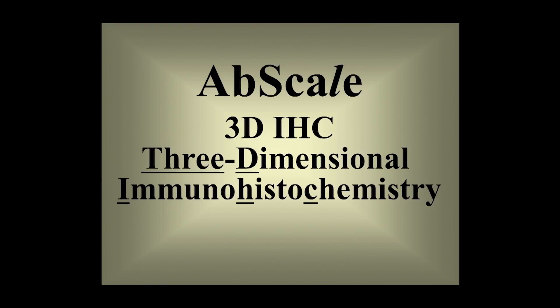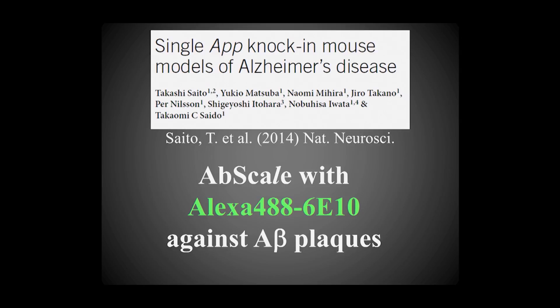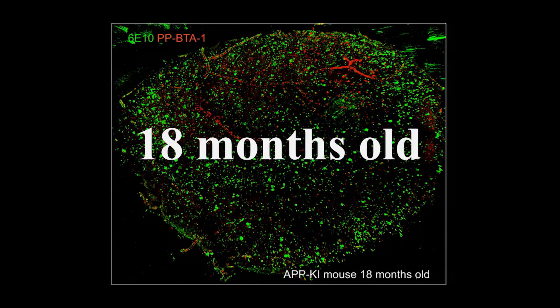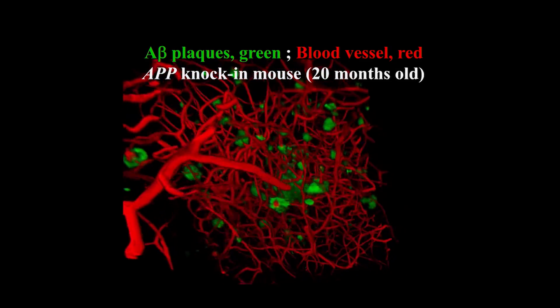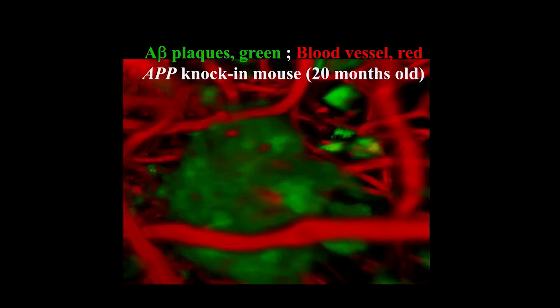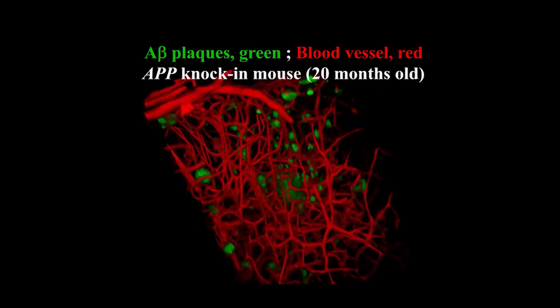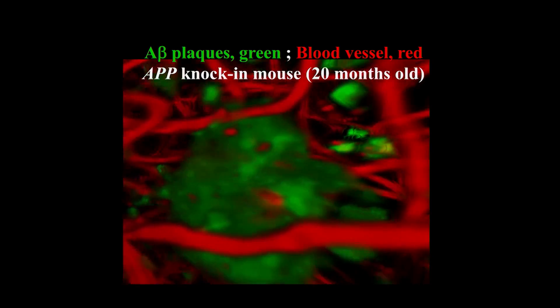We also invented the uSCALE method, enabling three-dimensional immunohistochemistry. The Saido group at BSI generated single APP knock-in mouse models of Alzheimer's disease. We applied the uSCALE method to the brain of aged APP knock-in mice to visualize A-beta plaques, using Alexa-488-labeled antibody. In a 9-month-old APP knock-in mouse brain, plaques were very sparse. But in 18-month-old mice, we observed many immunolabeled A-beta plaques. In another experiment, we transcardially perfused the entire vasculature with Texas-red lectin to label blood vessels in red, then immunostained A-beta plaques in green, obtaining a comprehensive 3D perspective of how A-beta plaques interface with blood vessels.